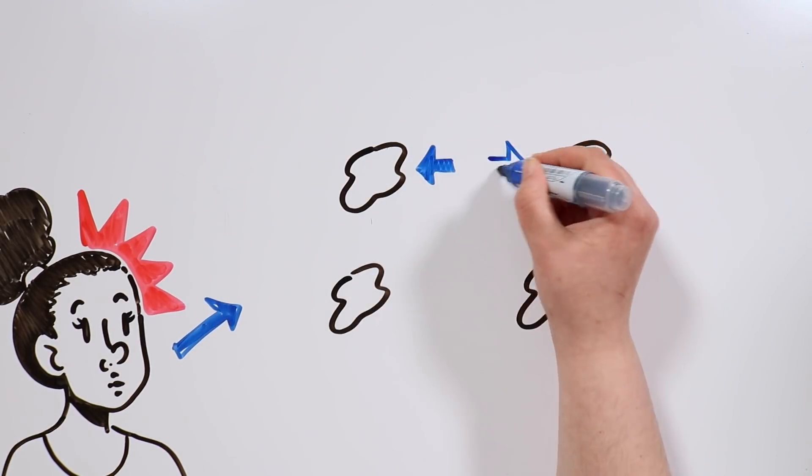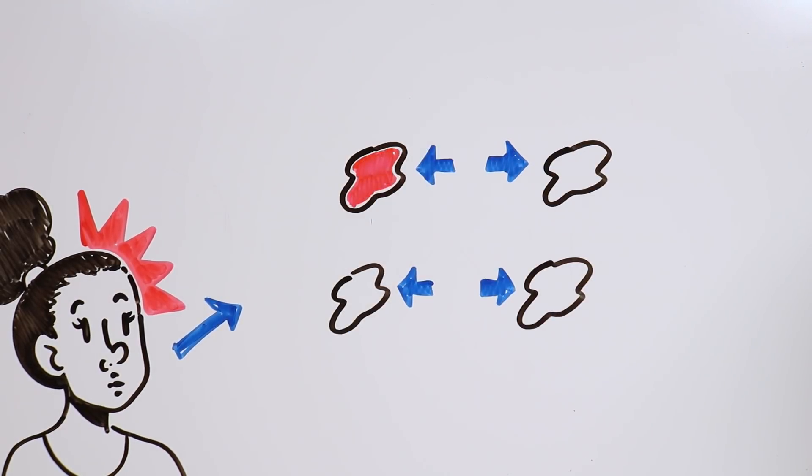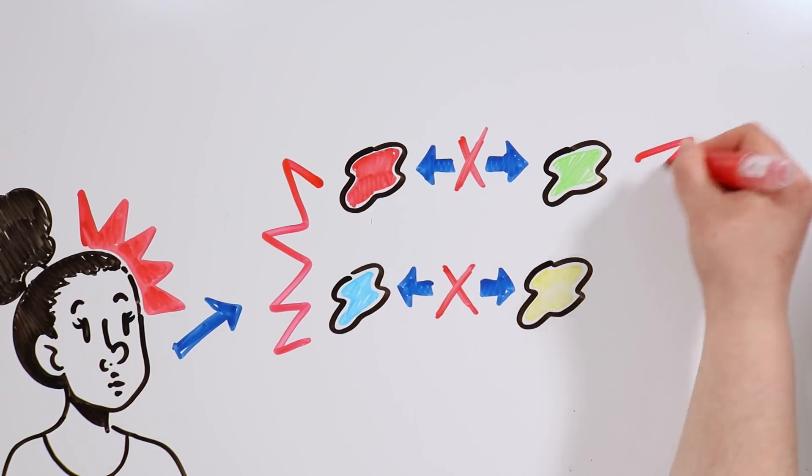Then we have dichromatism, which occurs when the patient only has two working cones, and results in the person having difficulties distinguishing reds from greens, or blues from yellows.